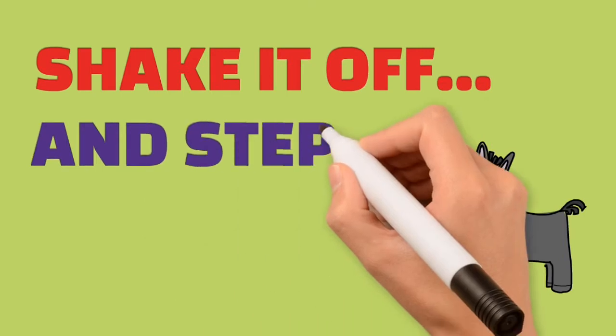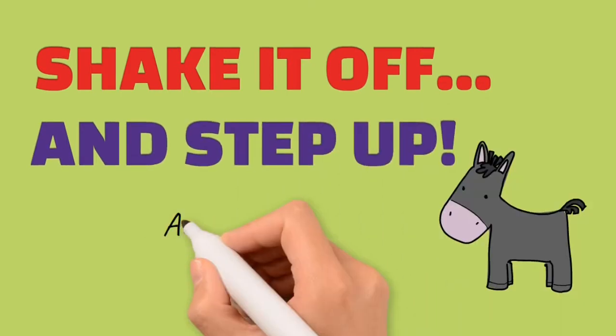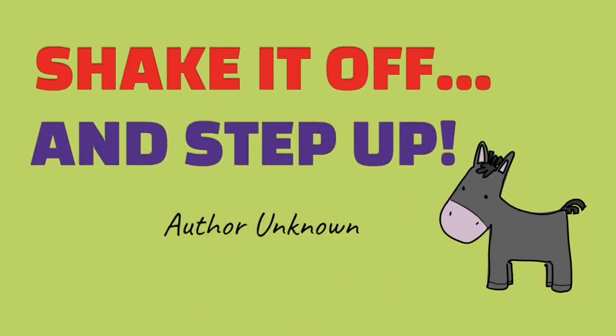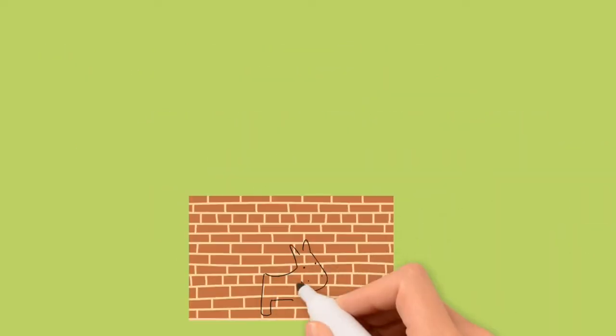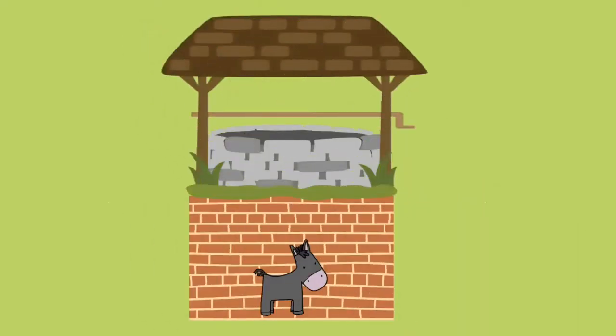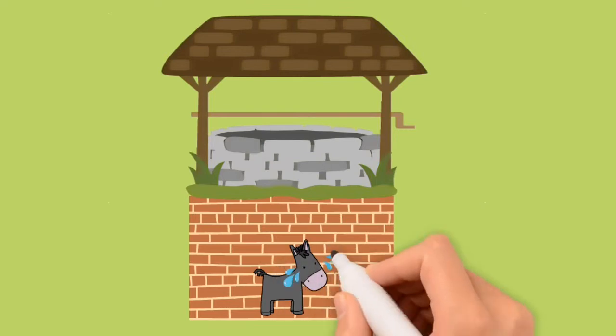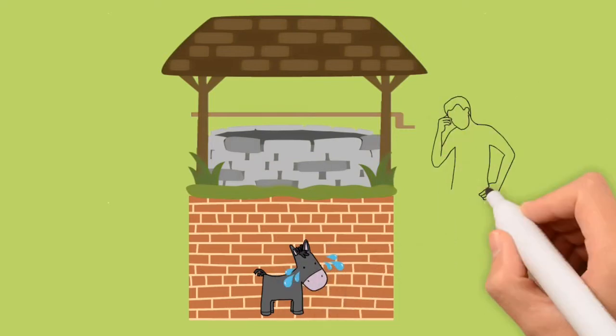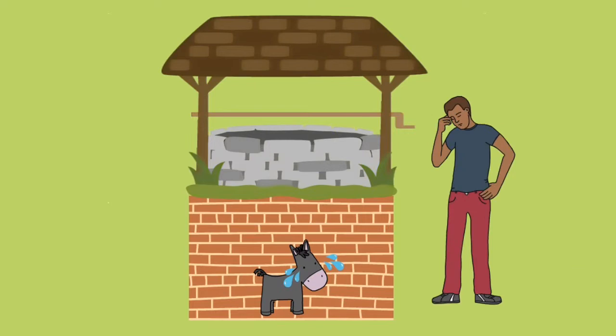Shake It Off and Step Up, read by Gabby. One day, a farmer's old donkey fell into an abandoned well. The animal cried for a long time while the farmer figured out what to do.